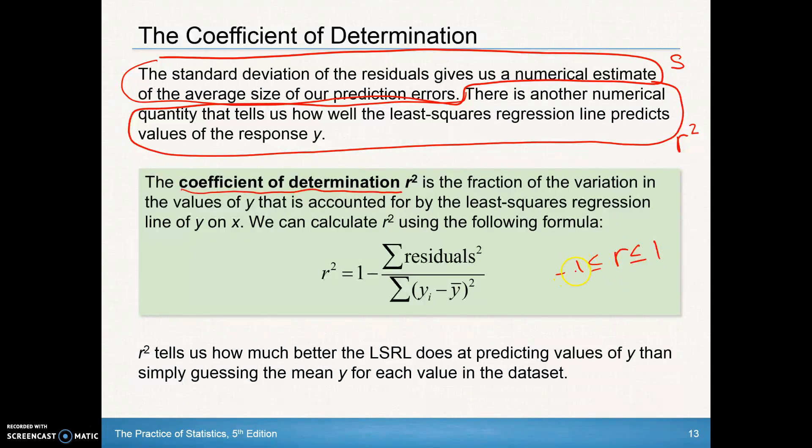If we square a negative number, it's going to be positive. So, our r-squared value will always be a number between 0 and 1. It'll be a proportion, or you can even look at that as a percent.